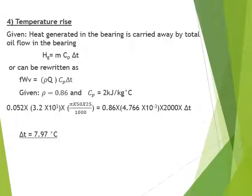For temperature rise, given that heat generated in the bearing is carried away by total oil flow, we use Hg = M × CP × ΔT. Substituting all variables on both sides of the equation, the temperature rise ΔT = 7.97°C.